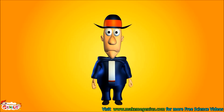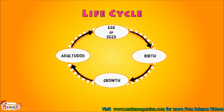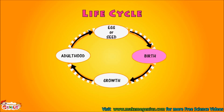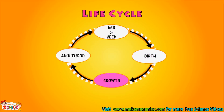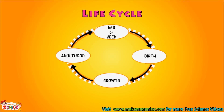Do you know every living species has a life cycle? Let me tell you about life cycles. Look at this picture. It shows a simple life cycle. All living species keep changing throughout life. It starts from egg or seed, they take birth, they grow up, then they become adults, and they reproduce at this stage. When a plant or animal reaches young age, they can make babies.